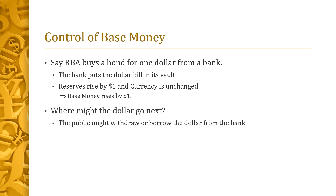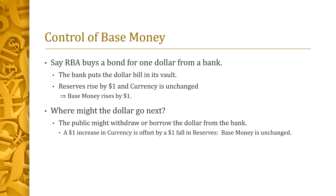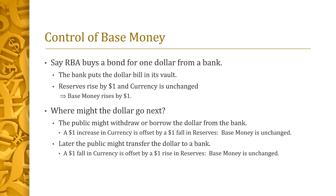Where might the dollar go next? The public might withdraw or borrow it from the bank, raising currency by one dollar and lowering reserves by the same amount — showing the RBA does not control these two aggregates individually. But base money, their sum, remains unchanged. Later, the public might deposit the dollar or use it to repay a loan, lowering currency by one dollar and raising reserves by one dollar. Again, base money is unchanged.